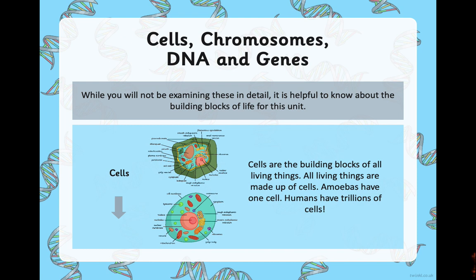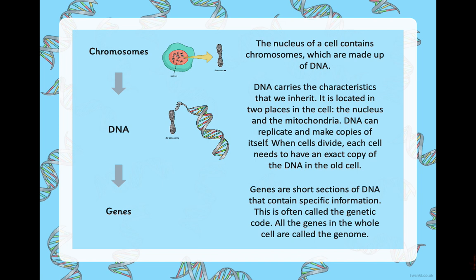Cells are the building blocks of all living things — all living things are made up of cells. Amoebas have one cell and humans have trillions of cells. We touched on this a little when we were doing animals including humans and looking at the circulatory system. So, cells are the building blocks of all living things.